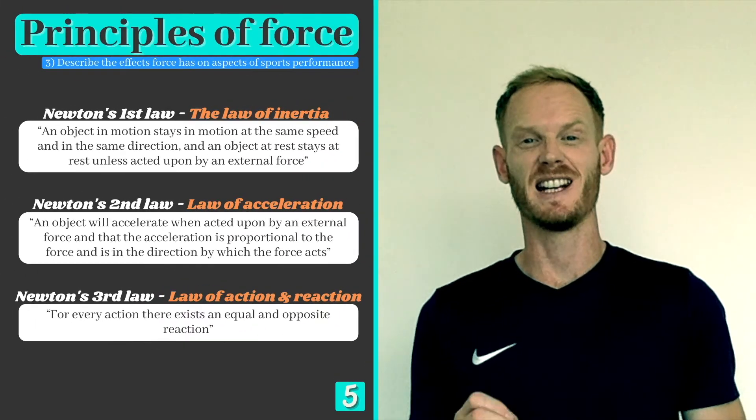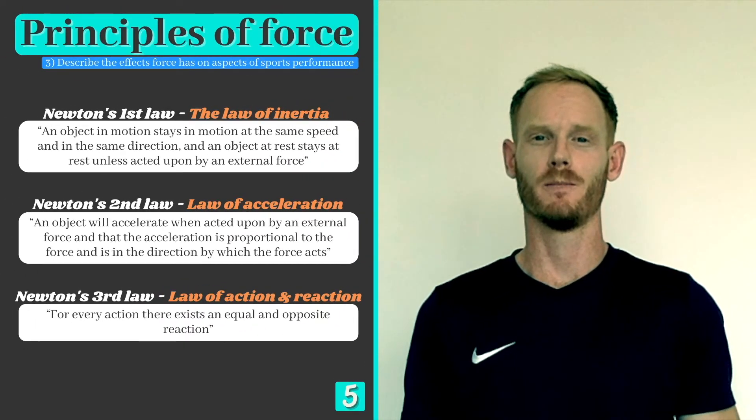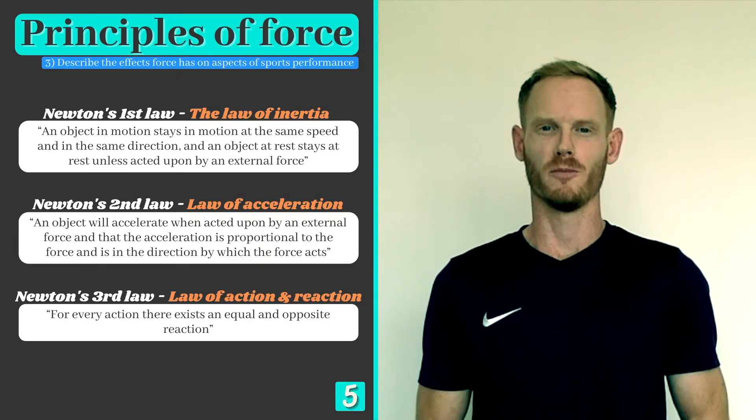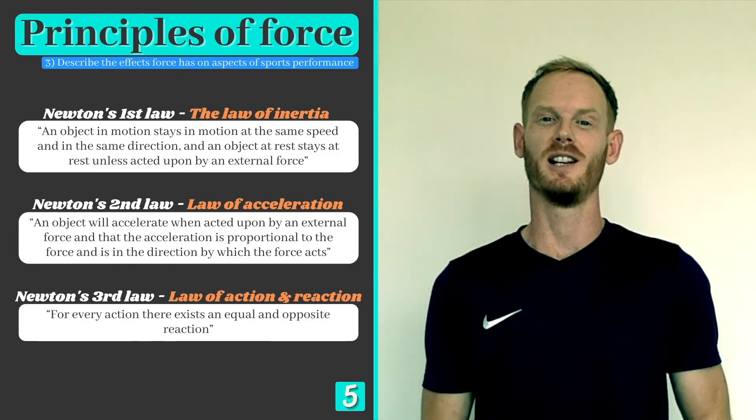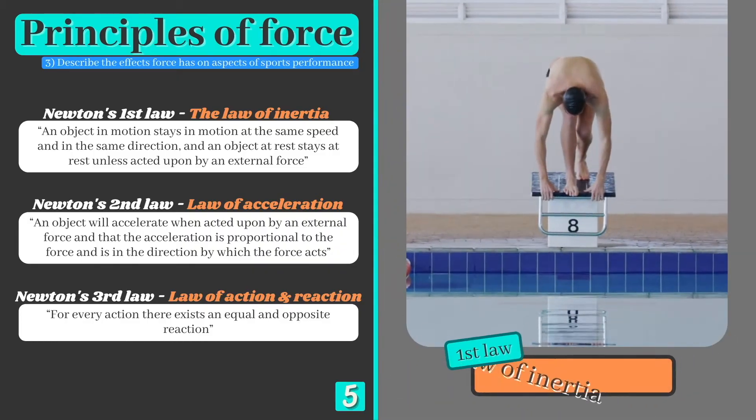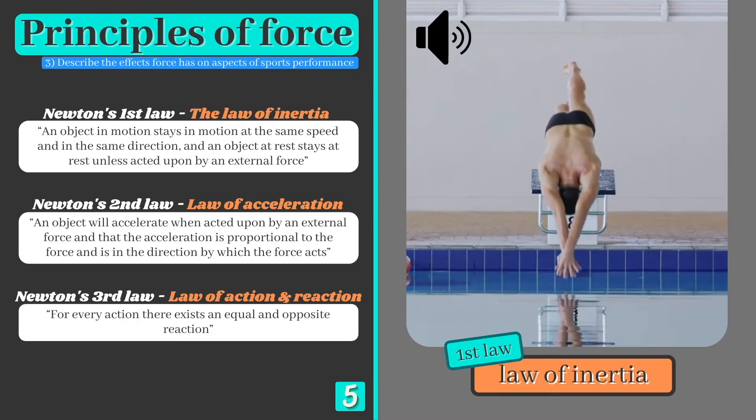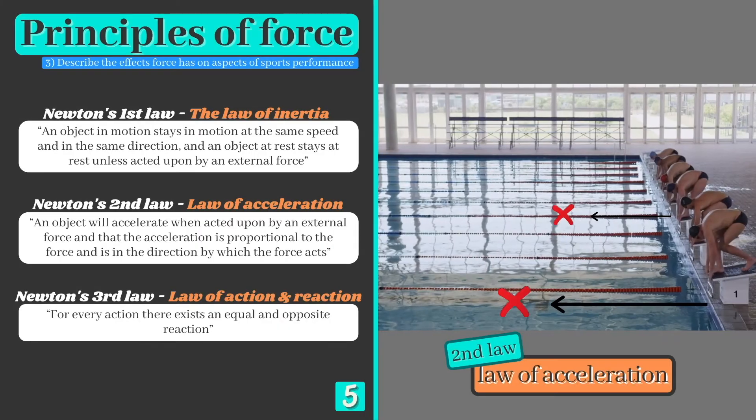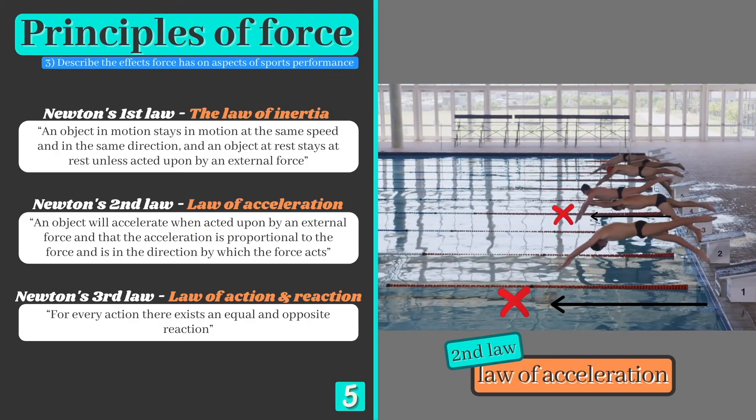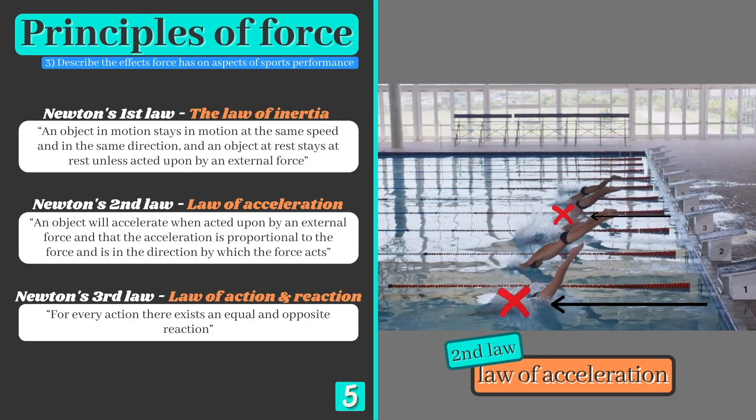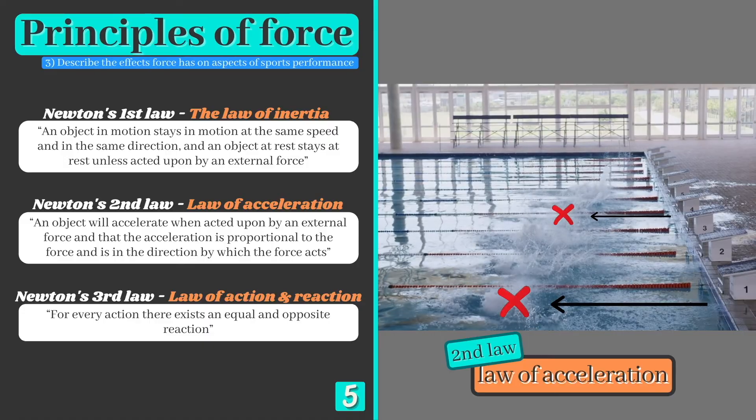So now that you are able to name, define and explain each law of motion, we'll take a look at one final example from sport that summarizes all three laws in one. When a swimmer takes their marks in the blocks before a race, their body is stationary or in a state of inertia. When the buzzer sounds, their muscles provide the external force needed to produce movement. The amount of force applied will determine how quickly they accelerate and therefore how far they are able to dive before they make contact with the water.